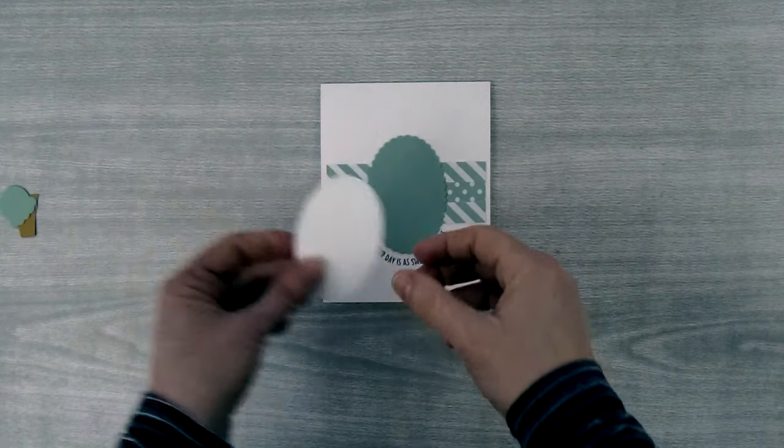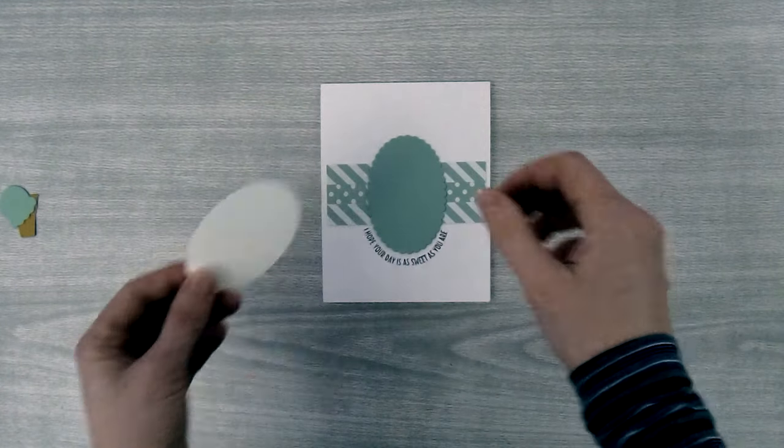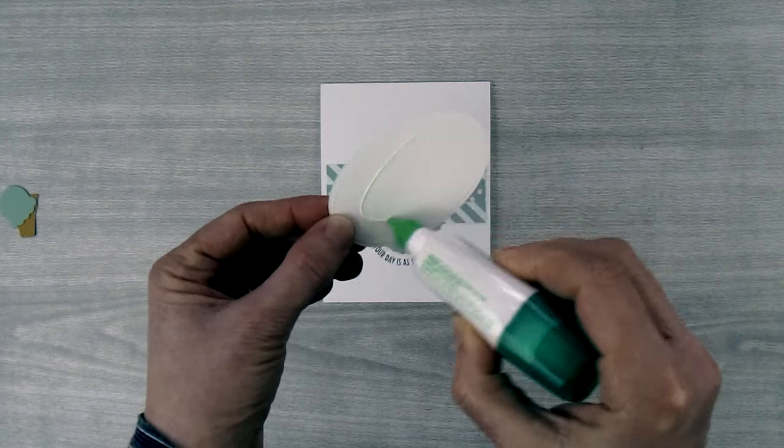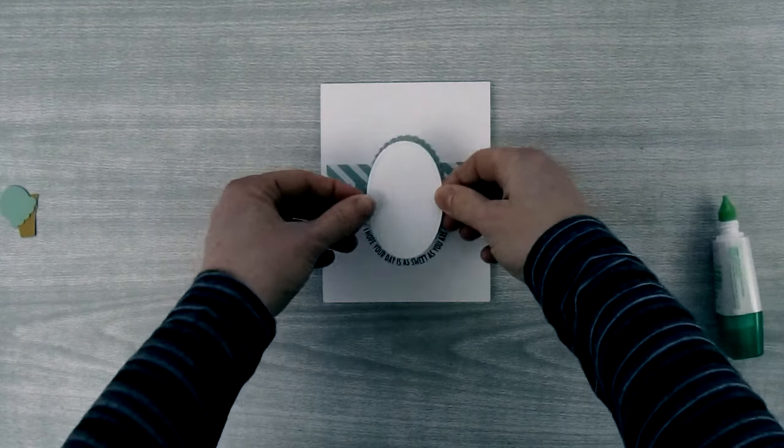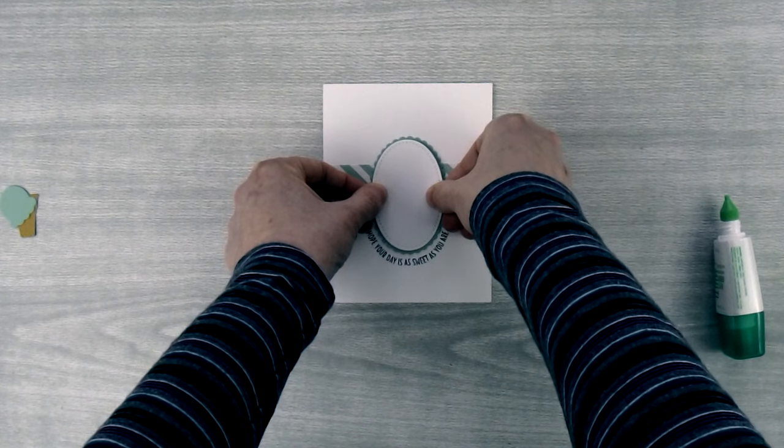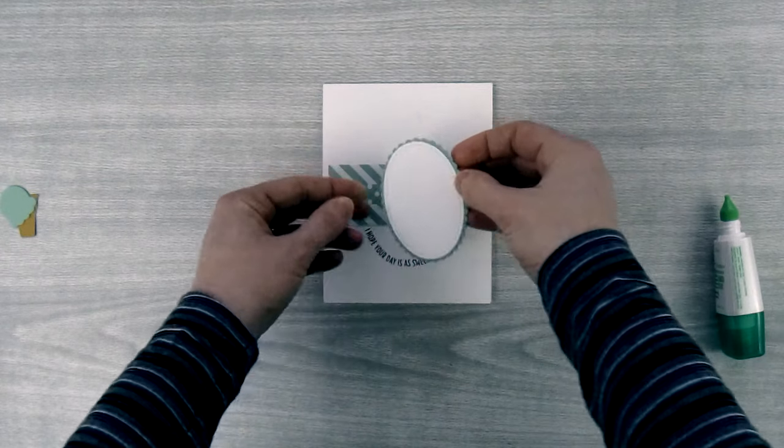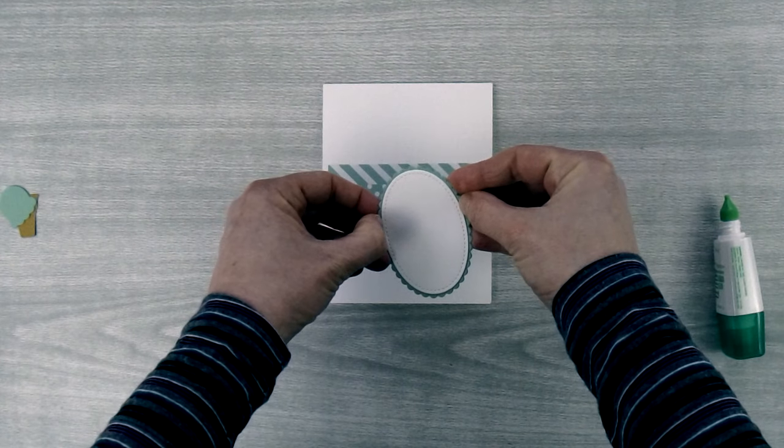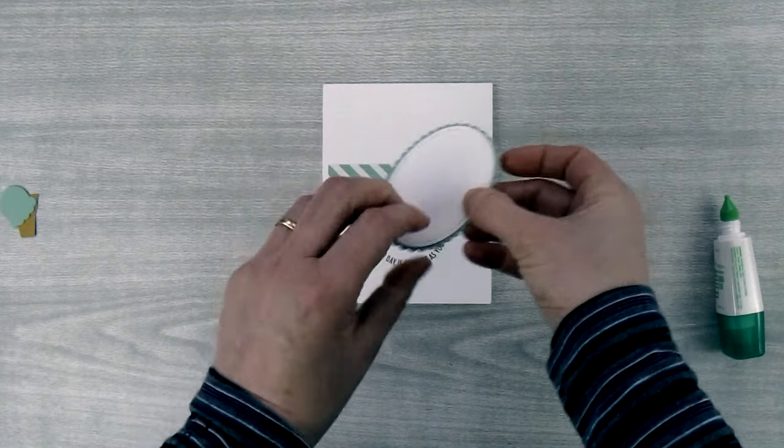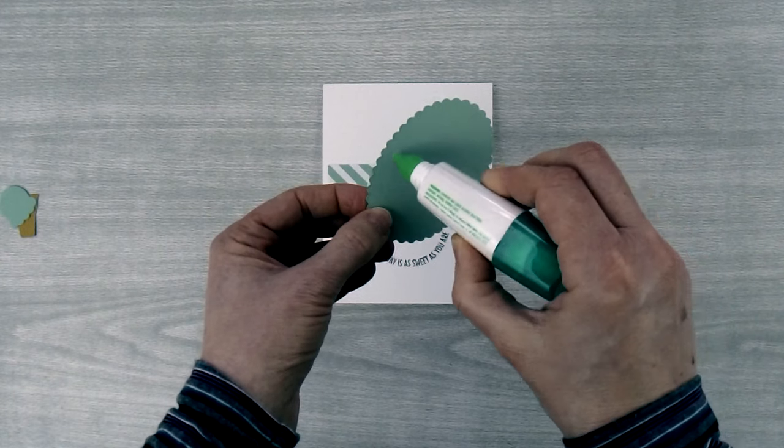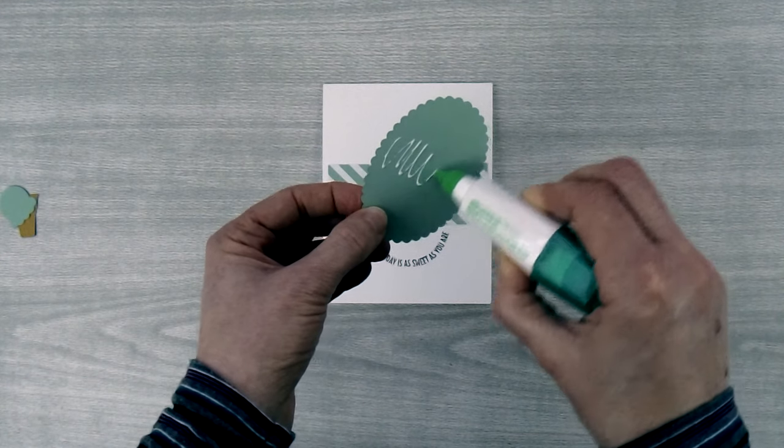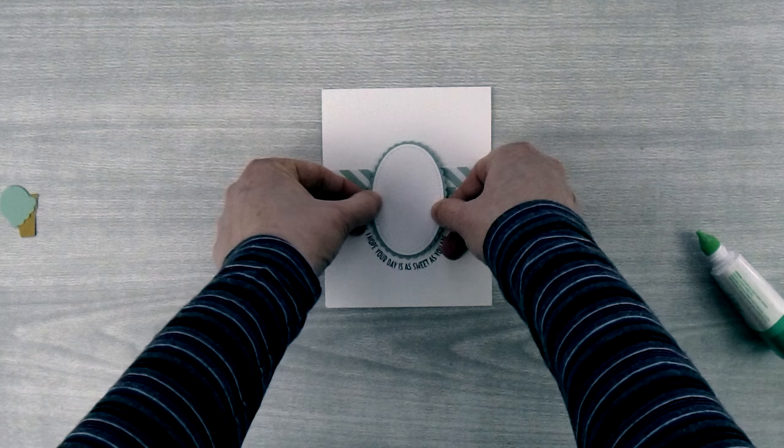Now the next thing we're going to do is we're going to glue the ovals together. So I'll take a little bit of Tombow for that and I'll glue my two ovals together. Lift it up because I haven't actually glued it to my project yet. Make sure it looks good. Then I'm going to put a little bit of Tombow in the center of this piece and I'm just going to adhere that down, keeping my greeting down here in mind.